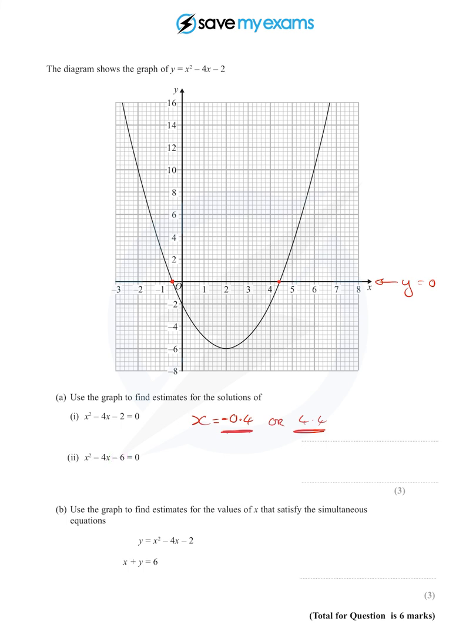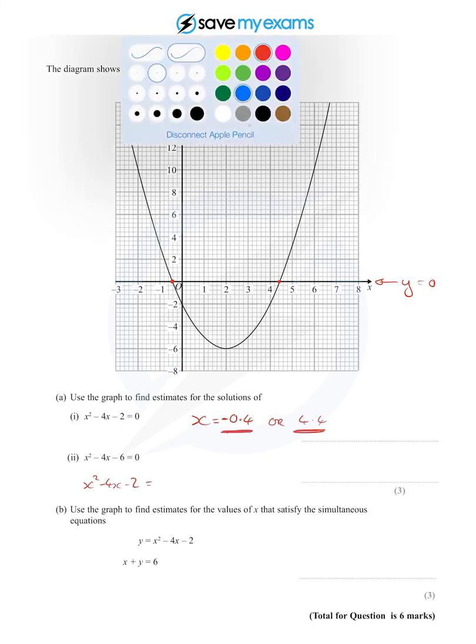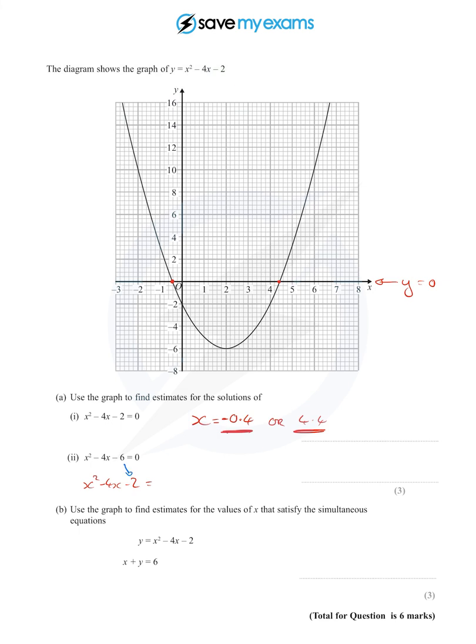Well, how did I get from minus 6 to minus 2? I add 4, and so I add 4 to the other side as well.